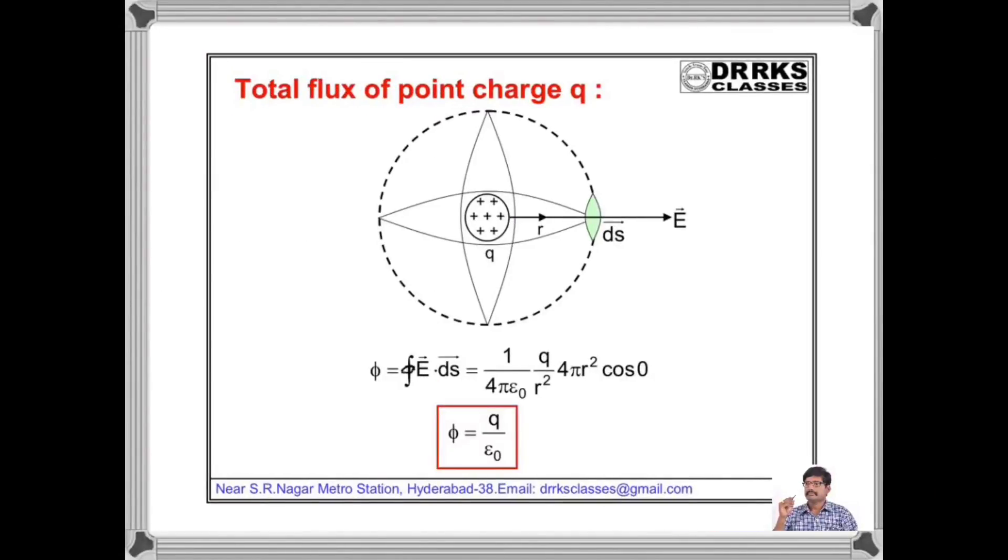Let us calculate the total electric flux emitted by a point charge q. Imagine a Gaussian surface which is a sphere of radius r. If ds is the small element of the spherical surface, the total electric flux φ is equal to integral of E dot ds, where E is the electric field on the surface.